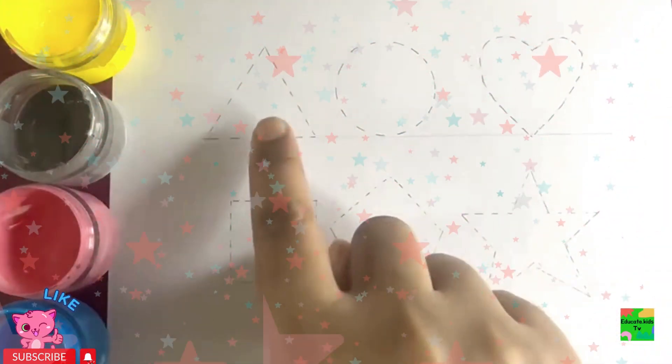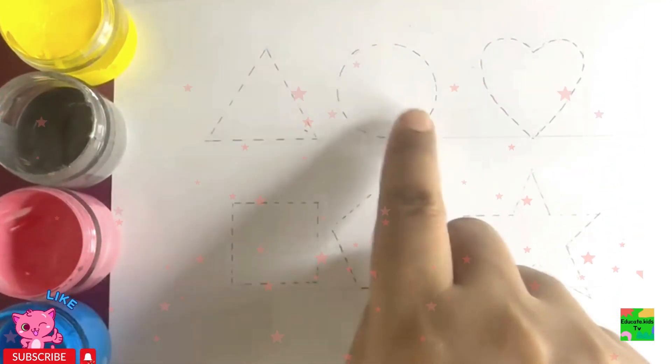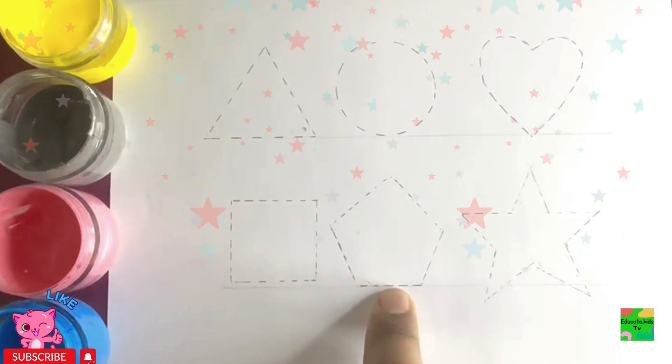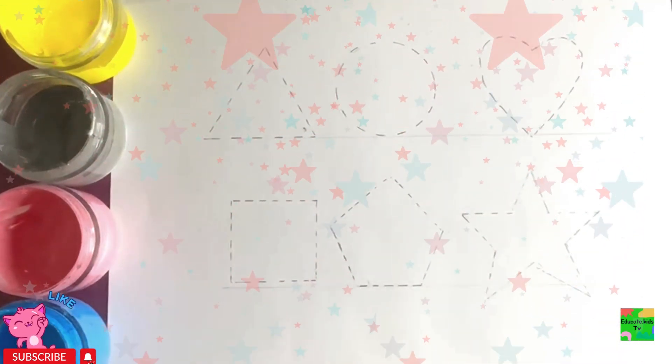Now, let's learn our shapes. Triangle, circle, heart, square, pentagon, star. Hooray!